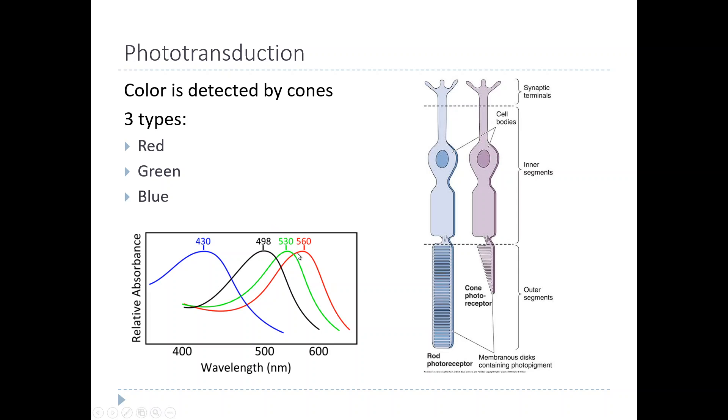Now of course, there are only three types of cones, but we can see way more than three types of colors. This is another example of population coding because colors are represented in your eye by combinations of different cones being activated by a given wavelength of light. For example, if you have both red and blue cones being activated at the same time, you will perceive that as purple.